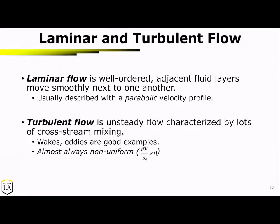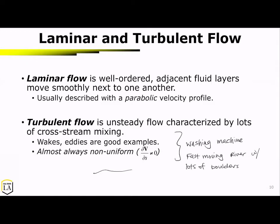Laminar flow is categorized as well-ordered, very smooth movement, and it generally follows a beautiful parabolic velocity profile. Turbulent flow, however, has very unsteady characteristics with lots of cross-stream mixing — think of wakes and eddies. This is similar to a washing machine or a very fast-moving river with lots of rocks or boulders, where the flow moves around a boulder causing all of these eddies and little currents.